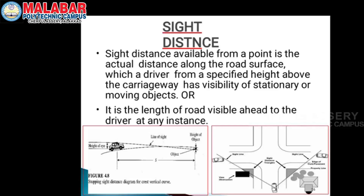This is the driving seat. Above the carriageway, the driver has visibility of a stationary or moving object.